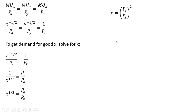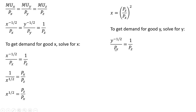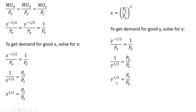To get the demand for good y, we take the middle term and set it equal to the far right term, and solve for y. Following a similar simplification process — moving y down into the denominator, cross-multiplying, and squaring both sides — we now have the demand for good y.